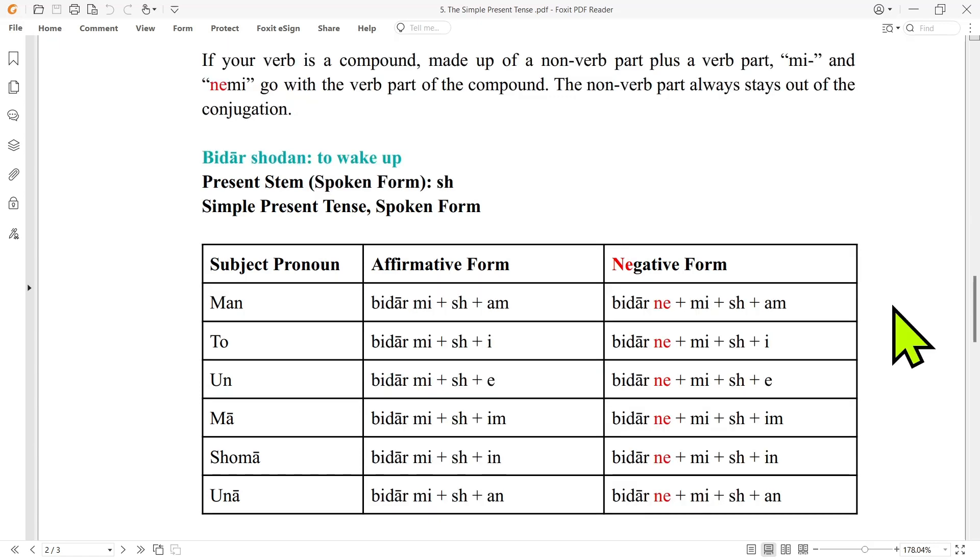And if your verb is a compound made up of a non-verb part plus a verb part, mi and ne mi go with the verb part of the compound. The non-verb part always stays out of the conjugation.